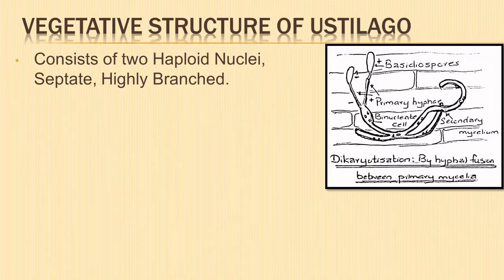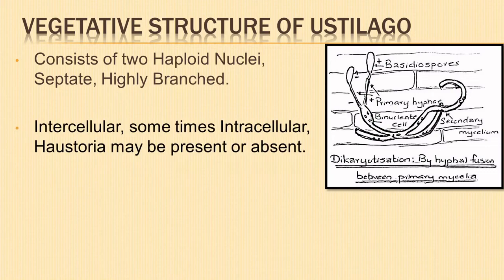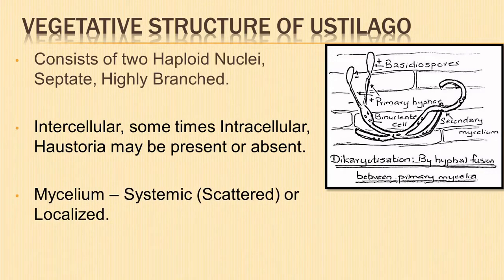The secondary mycelium is formed by dikaryotization of the primary mycelium. The hyphae consist of two haploid nuclei in each cell. These hyphae are septate and highly branched. The hyphae may be intercellular or intracellular and haustoria may or may not be present. When the mycelium is scattered throughout the various parts of the host it is said to be systemic, and if it ramifies near the point of infection it is said to be localized.